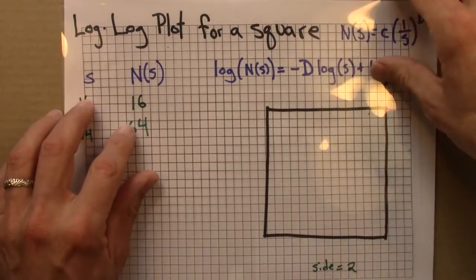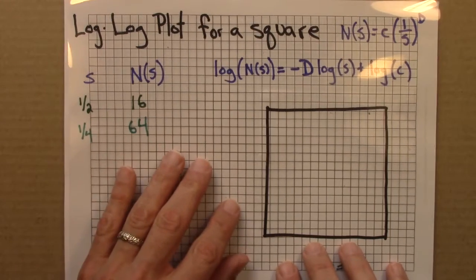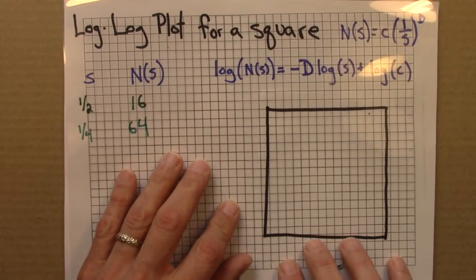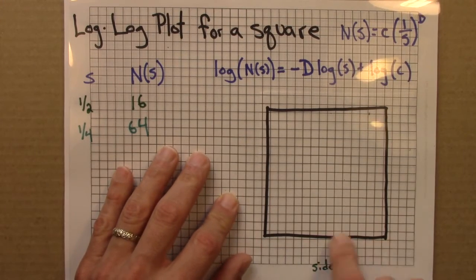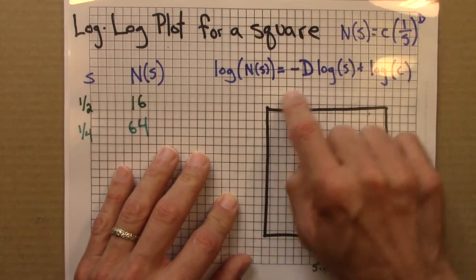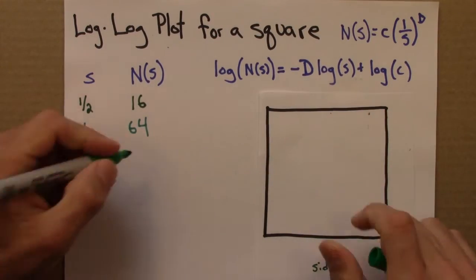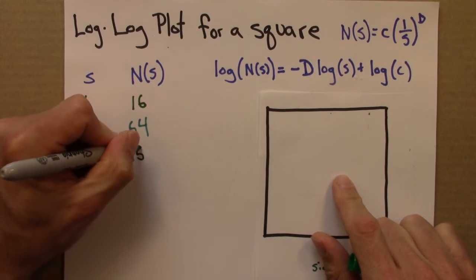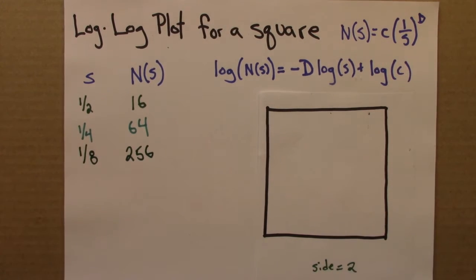And one more. Now this is a size one smaller still, it'll be an eighth. And we're going to get, if I can figure out how to line this up, 16 this way, 16 that way. 16 times 16 is 256.